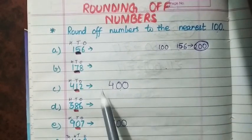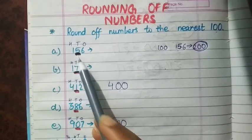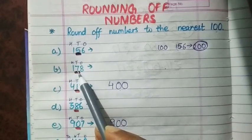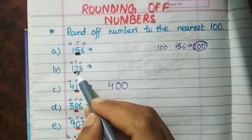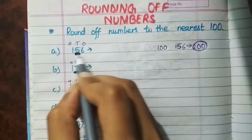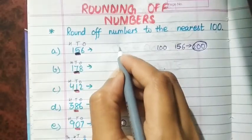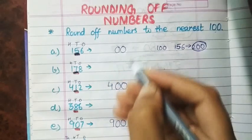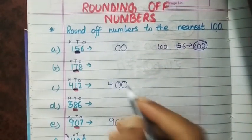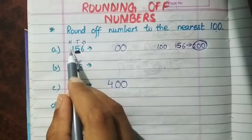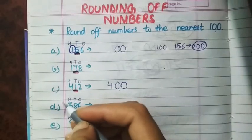Now, what if the digit at the 10's place is 5 or more than 5? When the digit at the 10's place is 5 or more, you make the 10's and 1's digits 0, just like the previous questions. But when it is 5 or more, you also add 1 in the 100's digit.